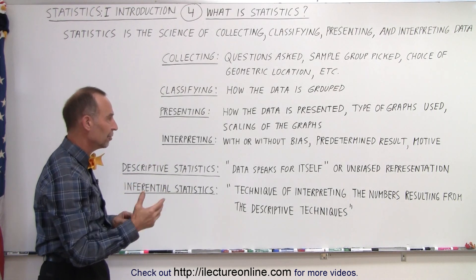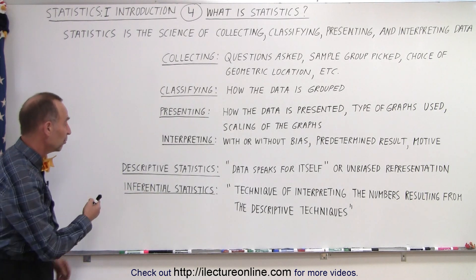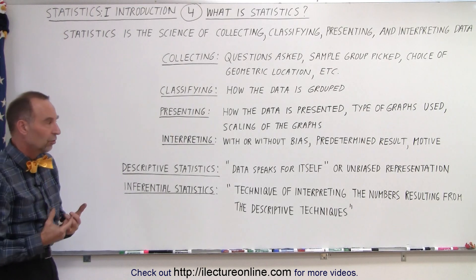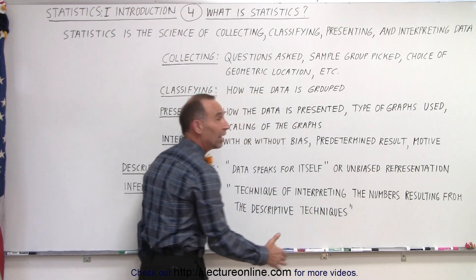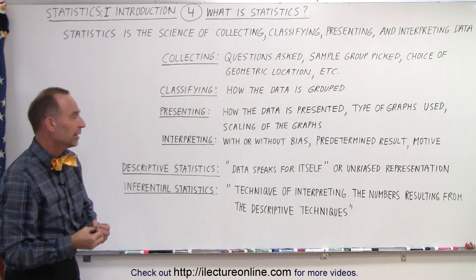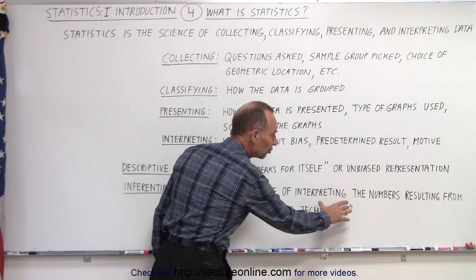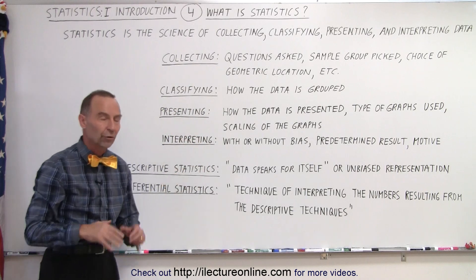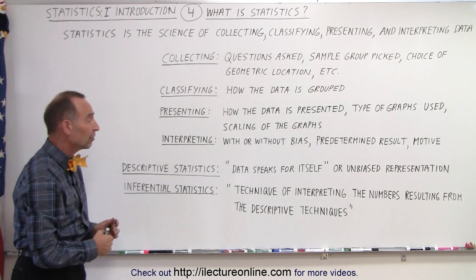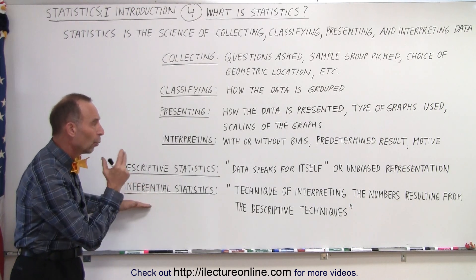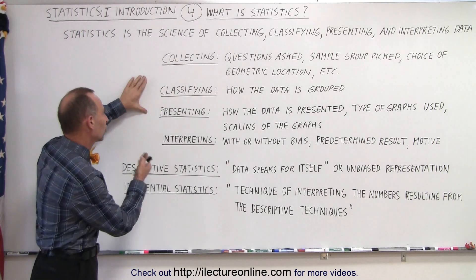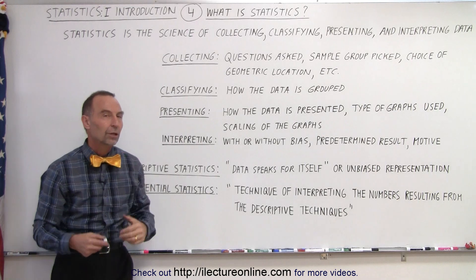We'll cover those topics in the videos to come. We also want to identify the difference between descriptive statistics and inferential statistics. Descriptive statistics really speaks for itself — you have the data, and it is what it is, tending to be a very unbiased representation of what is actually going on. Inferential statistics is based on the word 'infer' — what do you infer from the data? It's the interpretation of the numbers resulting from the descriptive technique. So first you collect the data — this is typically unbiased information — and then you infer what that information means. Descriptive statistics comes first, and inferential statistics is when you actually interpret what the data really means.